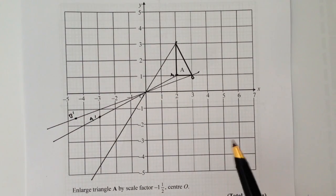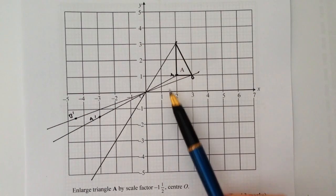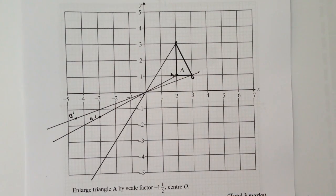Okay, and then the last one is that I'm going to go along two and up three. Well, two times one and a half is going to be three.